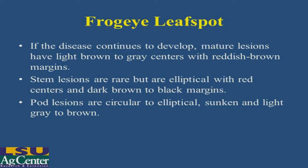The stem lesions are kind of rare, but if they are found, they are elliptical with red centers and dark brown to black margins. The pod lesions look a little different — they are circular or elliptical in shape, sunken, and light gray to brown. But this is not a symptom that we see very often.